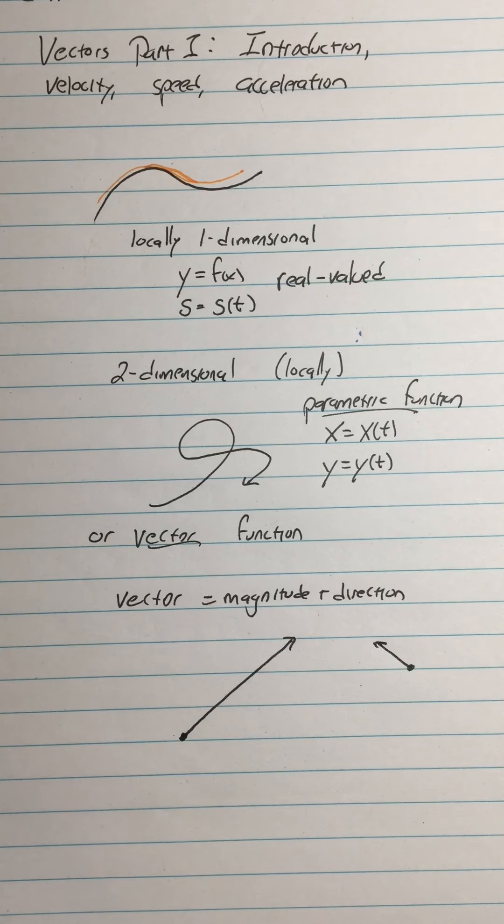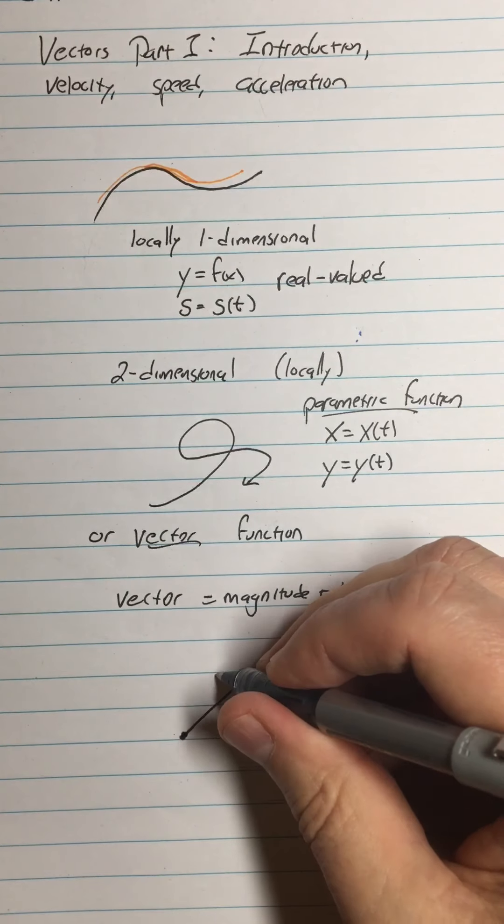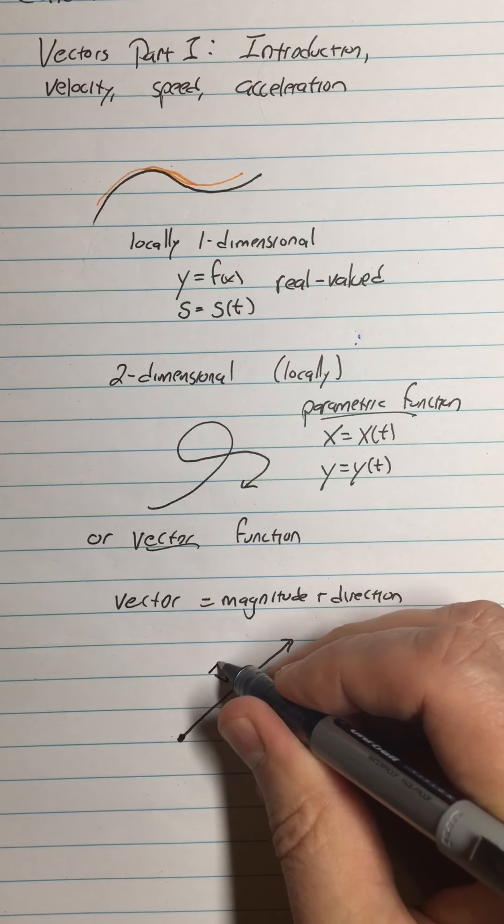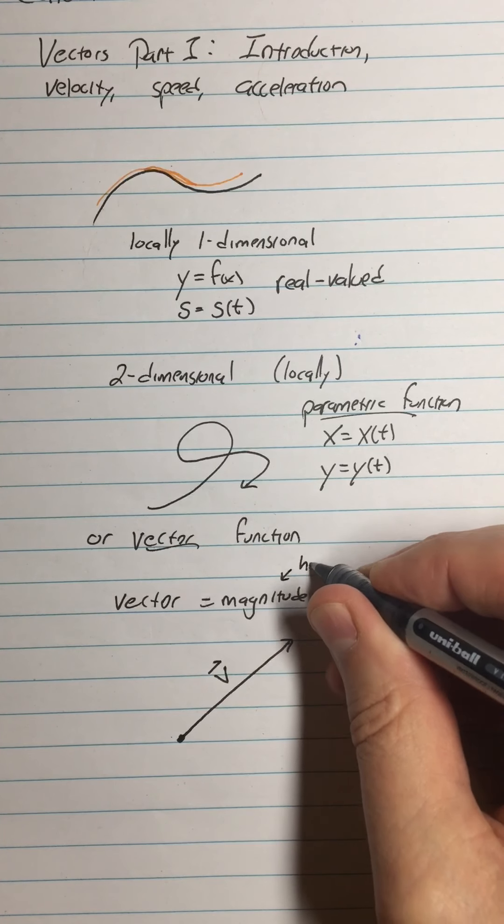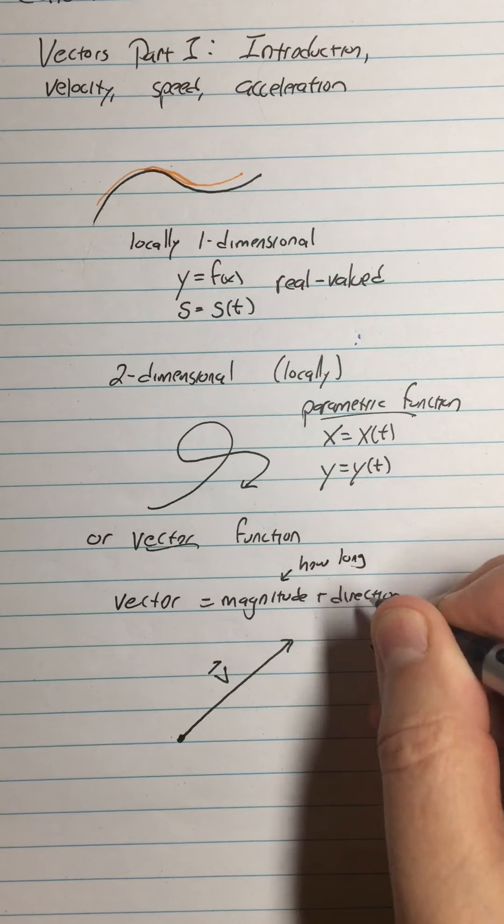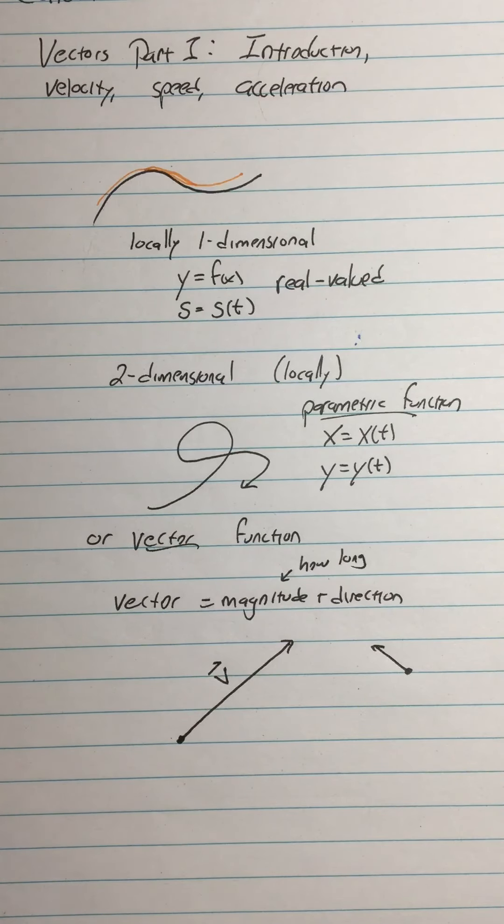So usually we represent them by a variable and we'll put a little hat on it with a little vector symbol, that's how we represent them. Some books will do them with like an italic bold or something like that so there are different ways to distinguish that you're dealing with a vector. So important things to know about vectors is first of all they have, their magnitude means how long it is and obviously direction means where they point.